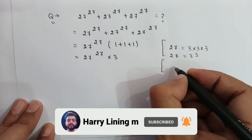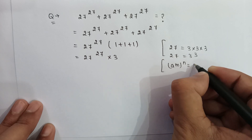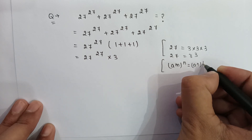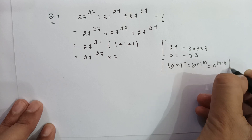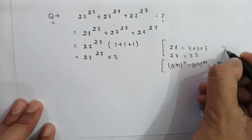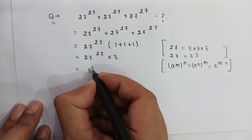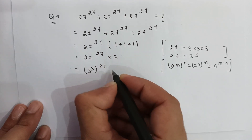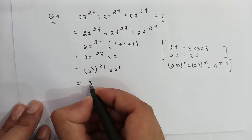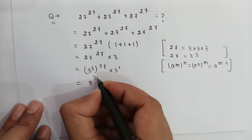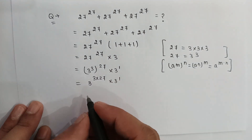We also know that a to the power m, whole power n, can be written as a to the power n, whole power m, which equals a to the power m multiplied by n. So 27 to the power 27 can be written as 3 to the power 3, whole power 27, multiplied by 3 to the power 1, and that equals 3 to the power 3 multiplied by 27, times 3 to the power 1.